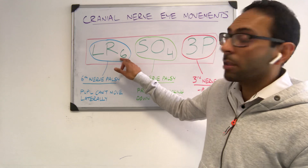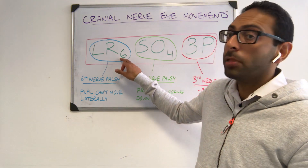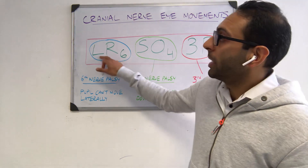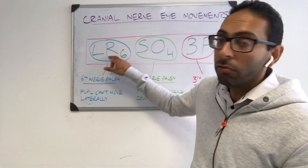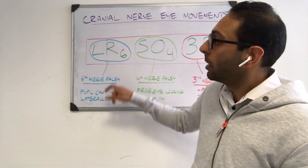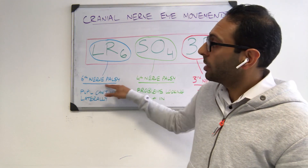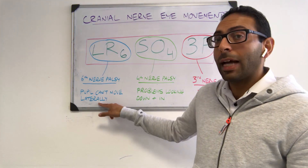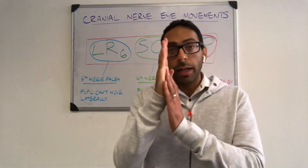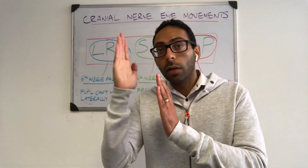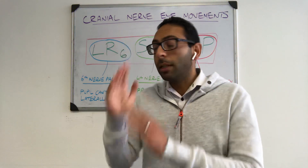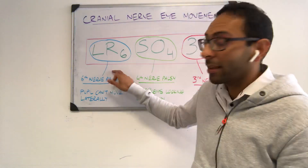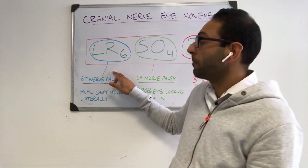Let's start with LR6 — the sixth cranial nerve, or the abducens nerve, innervates the lateral rectus muscle. So if you get a sixth nerve palsy, you can't look laterally, so your eye can't look beyond the midline. That's a sixth nerve palsy.